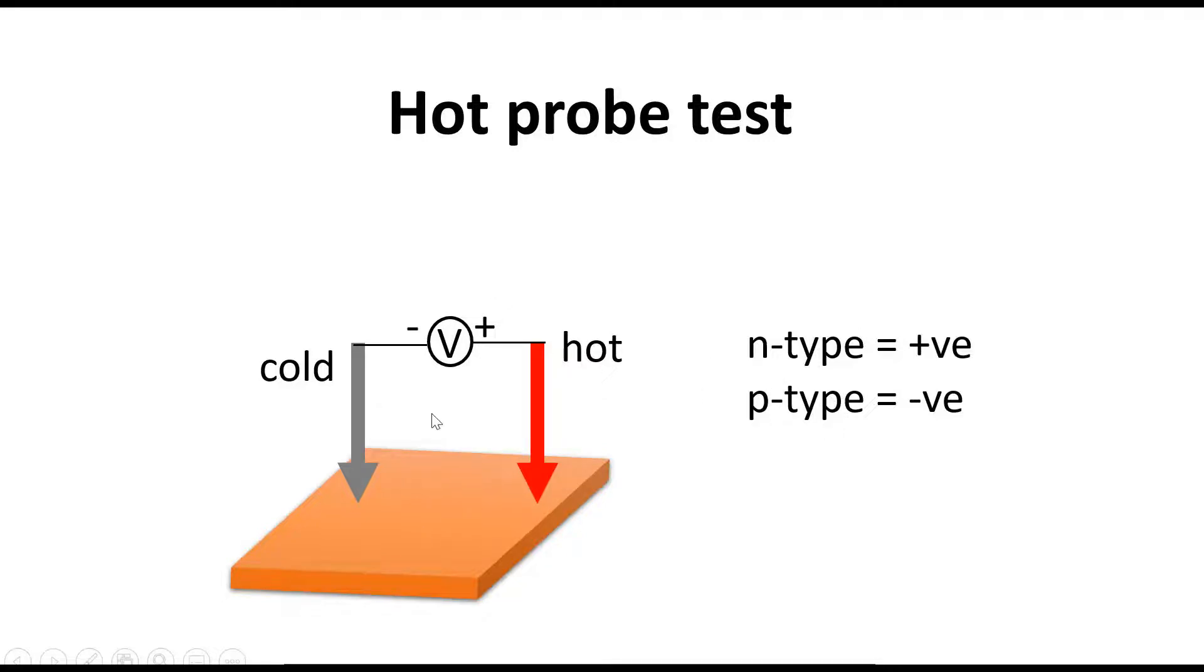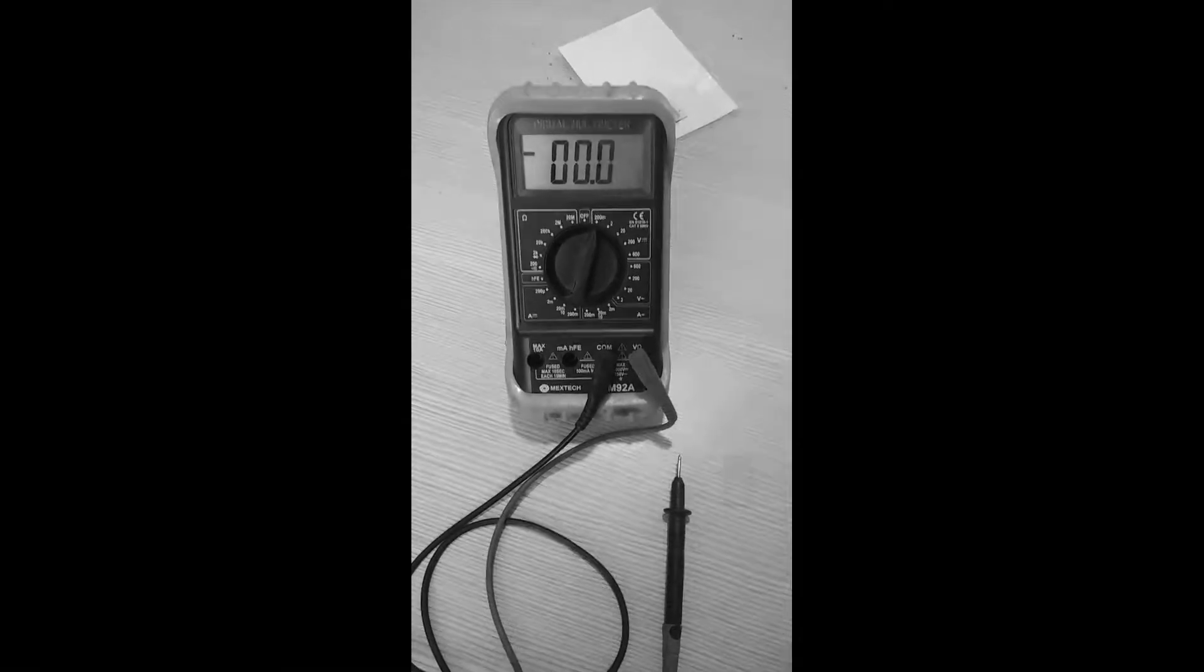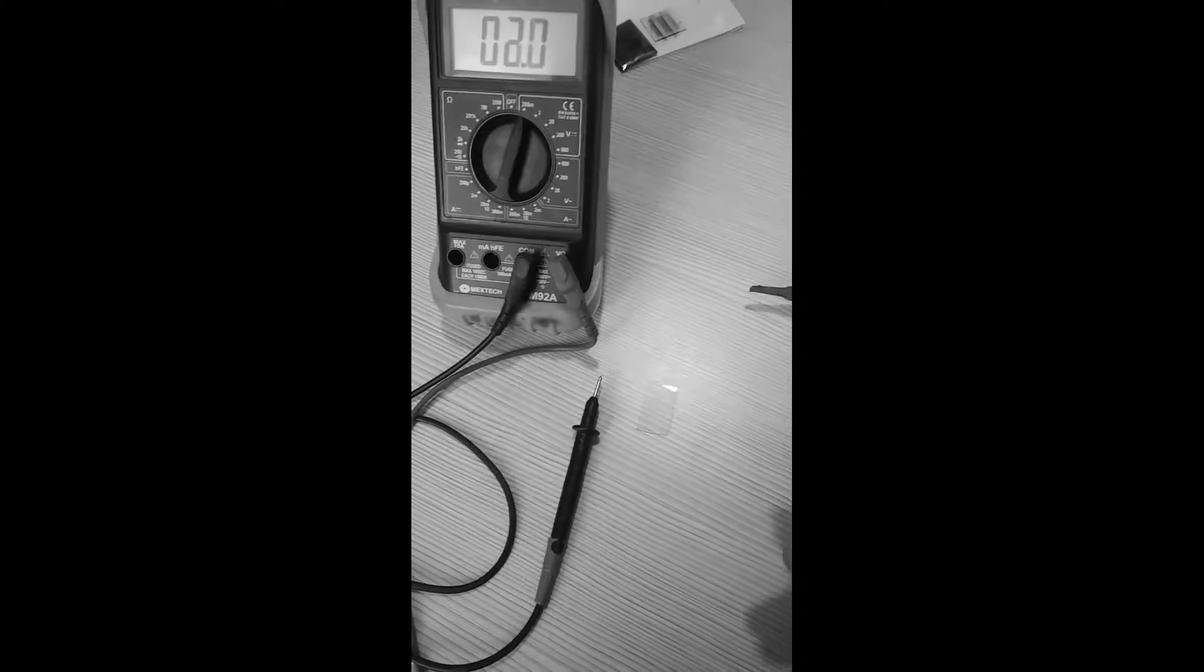This is a simple test. I will demonstrate it for you. This is our experimental setup: we have a multimeter and an ITO substrate. ITO is N-type, and this is a hot soldering wire.